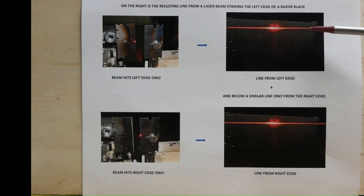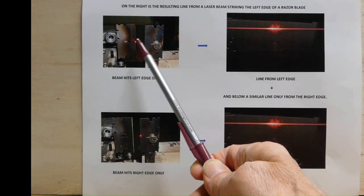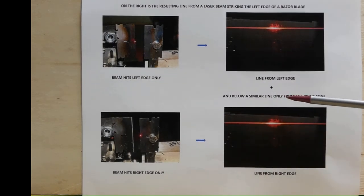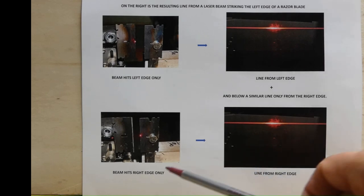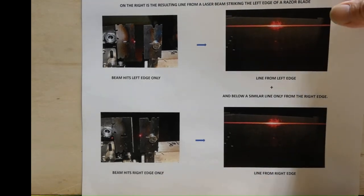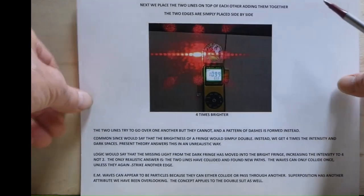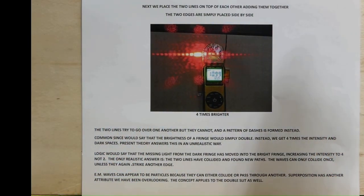On the right is the resulting line from a laser beam striking the left edge of a razor blade. Here it's hit the left edge and this will be a slit when we close it. Below is a similar line from the right edge only. Now we're going to combine the two lines together by closing the slit and making a single slit. So now we place the two lines on top of each other just as I said. The two edges are simply placed side by side. That puts the two lines on top of each other.